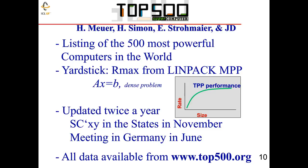This list of the 500 fastest computers gets updated twice a year — in November at the SC conference, which will be held in Denver this year, and at another supercomputing event held in Germany in June, which will be in Frankfurt. All data for the last 24 years has been collected at top500.org.